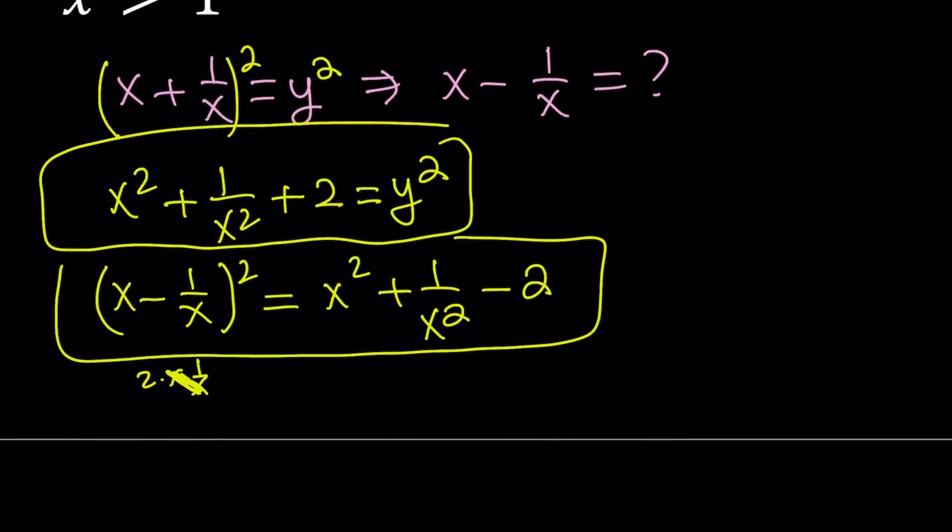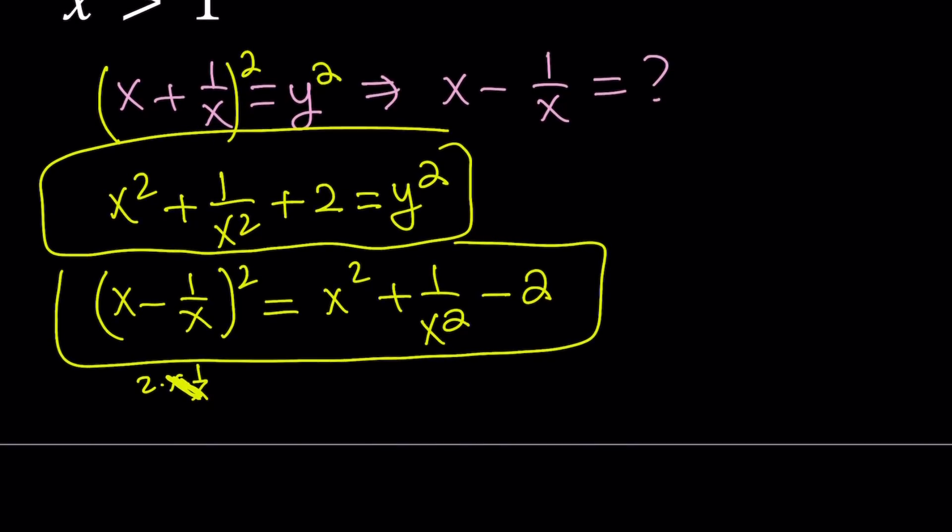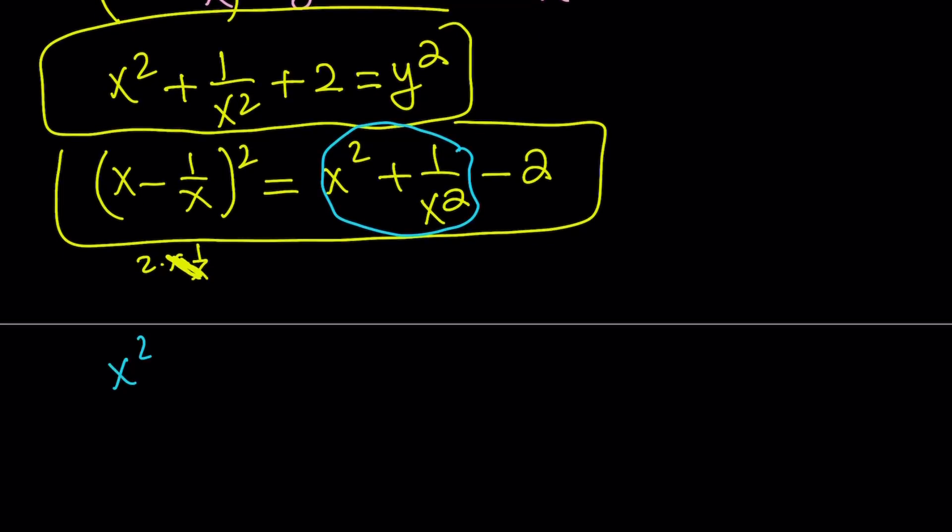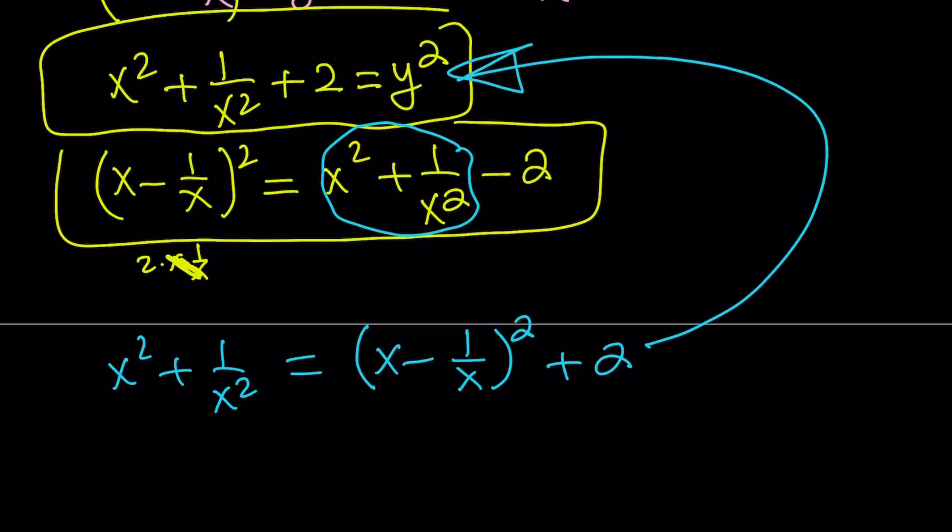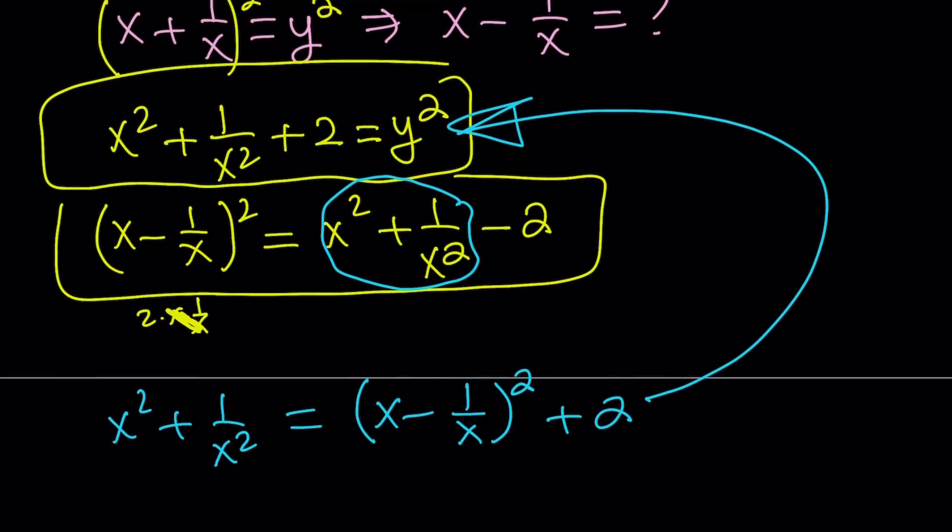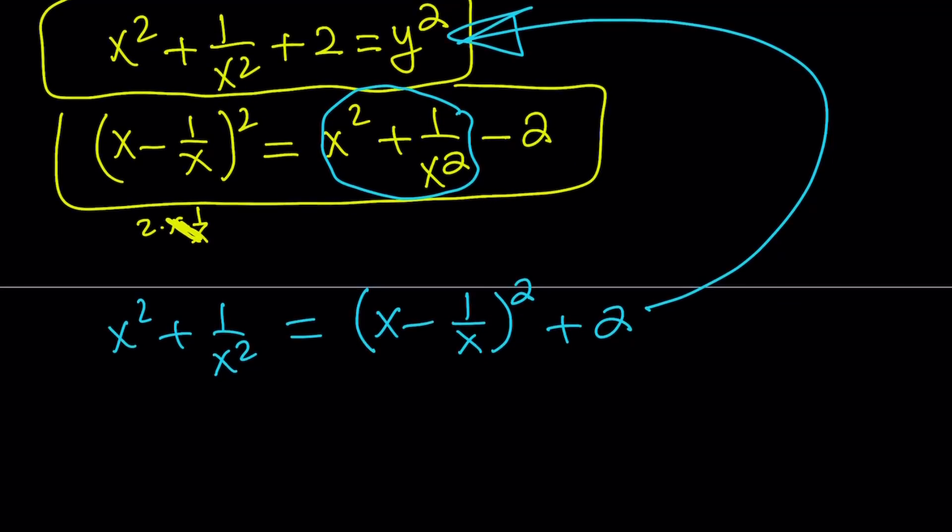In order to substitute, let's go ahead and isolate x squared plus 1 over x squared from here. This is what I would like to isolate from the second equation. Add 2 to both sides. Now, this is something that I want to substitute here in my first equation. If I do that, I'll be able to associate x plus 1 over x and x minus 1 over x. So x squared plus 1 over x squared can be written as x minus 1 over x quantity squared plus 2. That basically replaces the 2 in the first one, and then I have to add another 2 to it. That is going to become y squared.